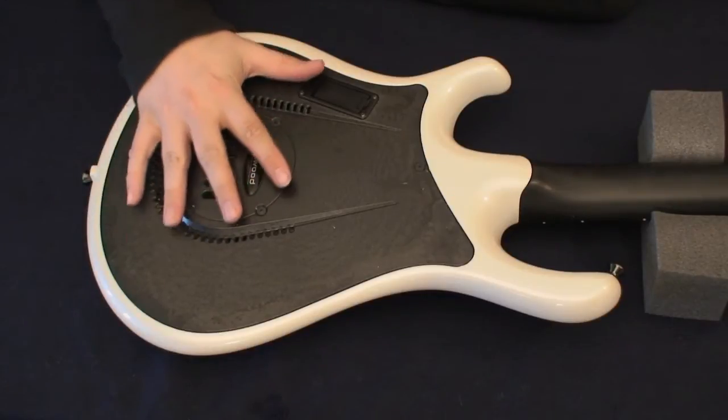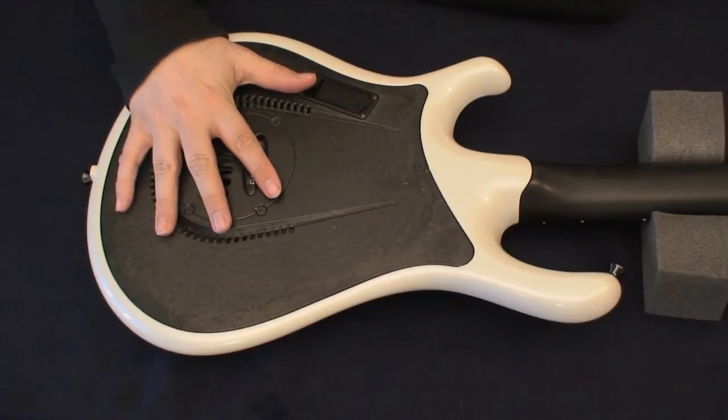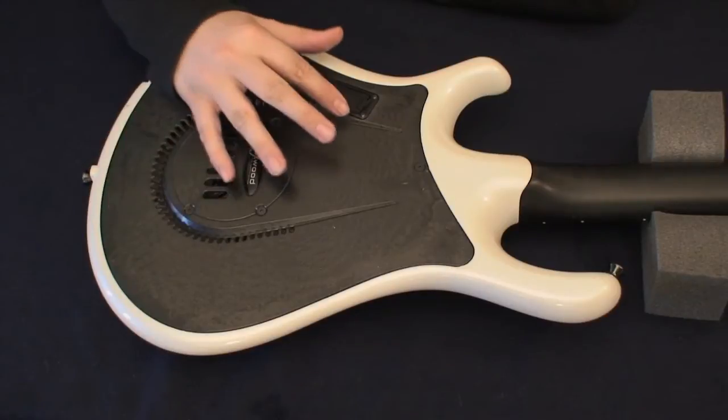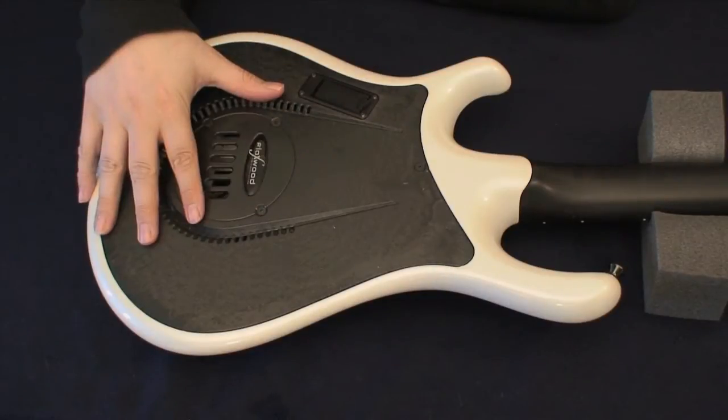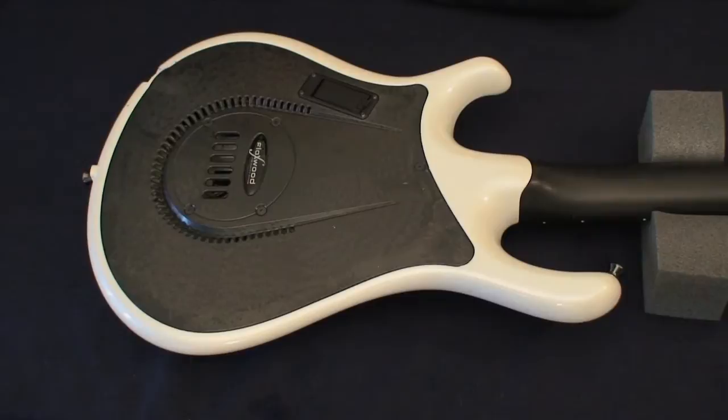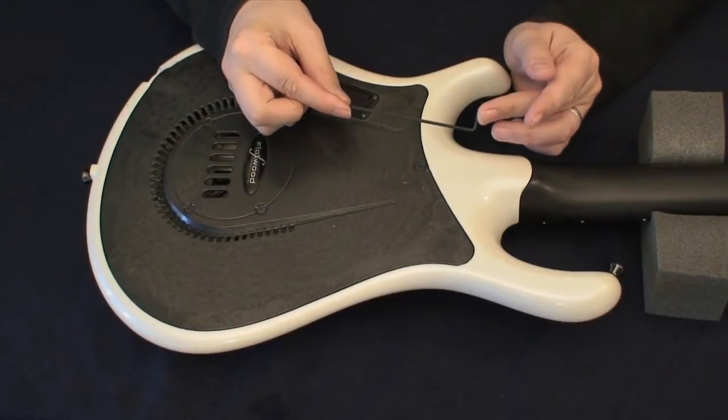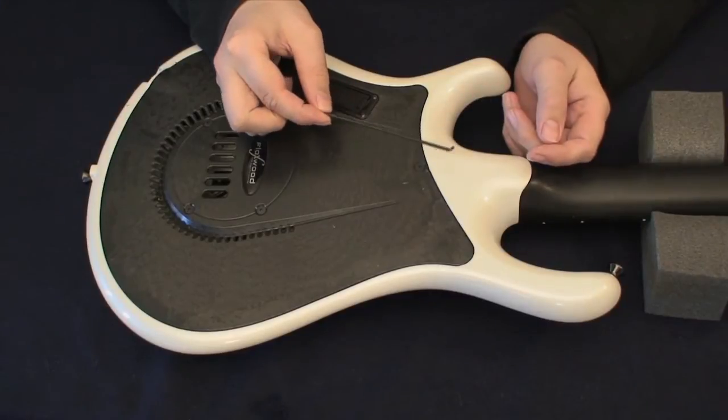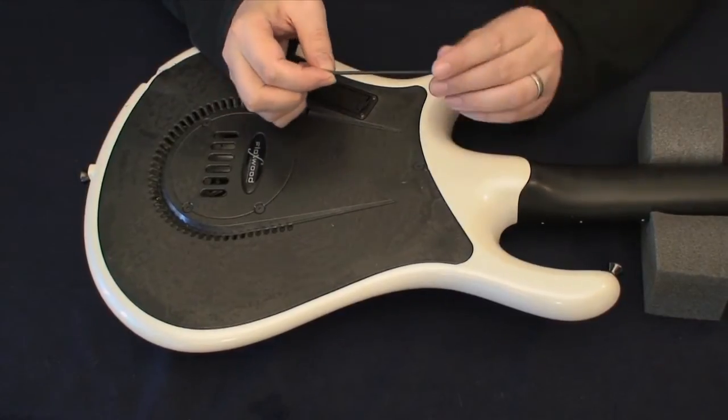To access the electronics of the guitar, like in this case with the piezo and everything, we need to remove the backplate. And this is where your wrench comes in handy. It's the same wrench as you used for accessing the crossroad.